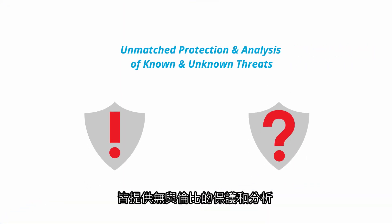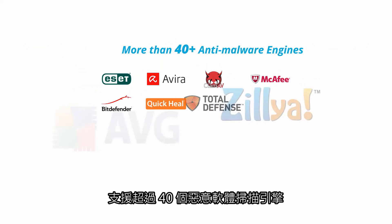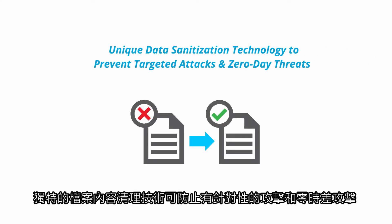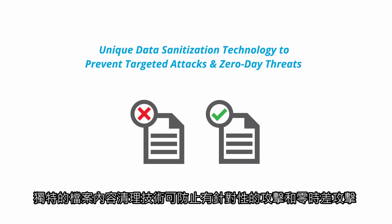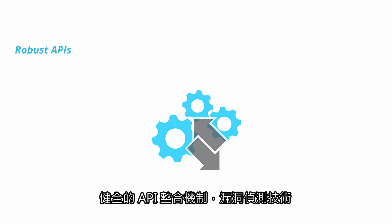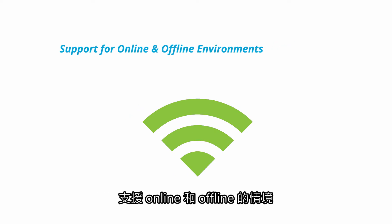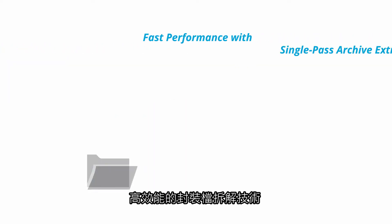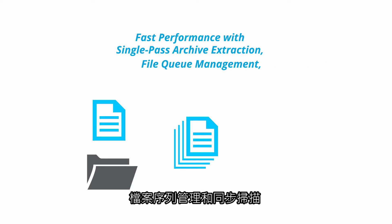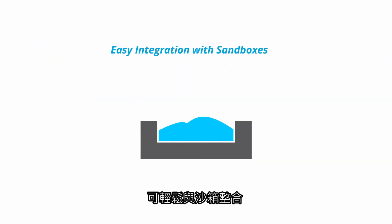OpSwap MetaDefender Core provides unmatched protection and analysis of known and unknown threats, with more than 40 anti-malware engines, unique data sanitization technology to prevent targeted attacks and zero-day threats, robust APIs, vulnerability detection, support for online and offline environments, fast performance with single-pass archive extraction, and file queue management and simultaneous scanning. Easy integration with sandboxes.